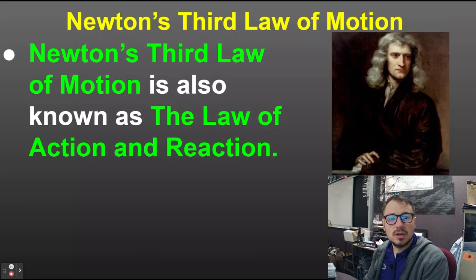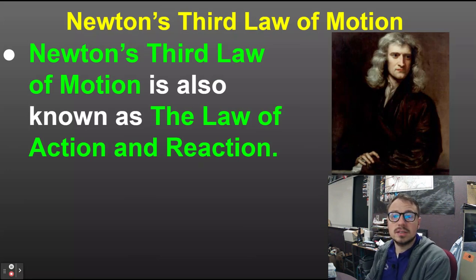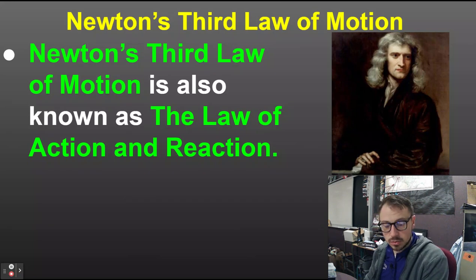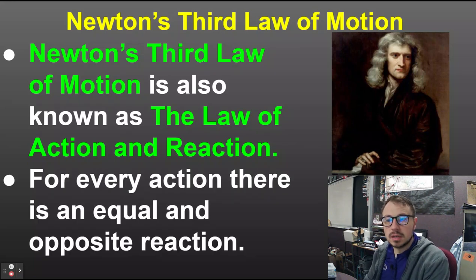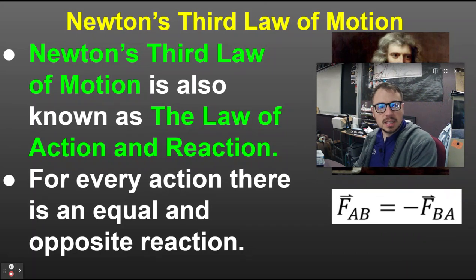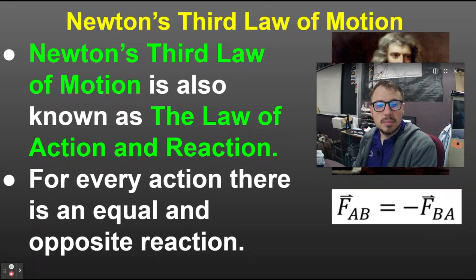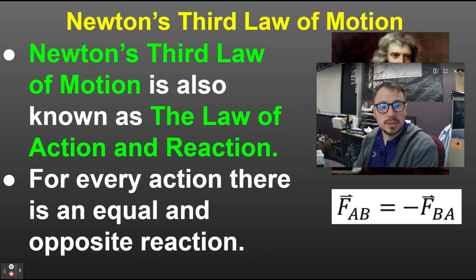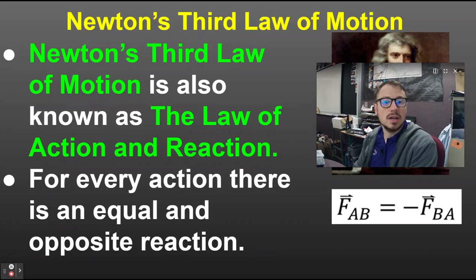So this is Newton's Third Law of Motion, also known as the Law of Action and Reaction. For every action, there is an equal and opposite reaction. Written mathematically, it states that the force of A acting on B is equal and opposite — that's what the negative sign is — of the force of B acting on A.